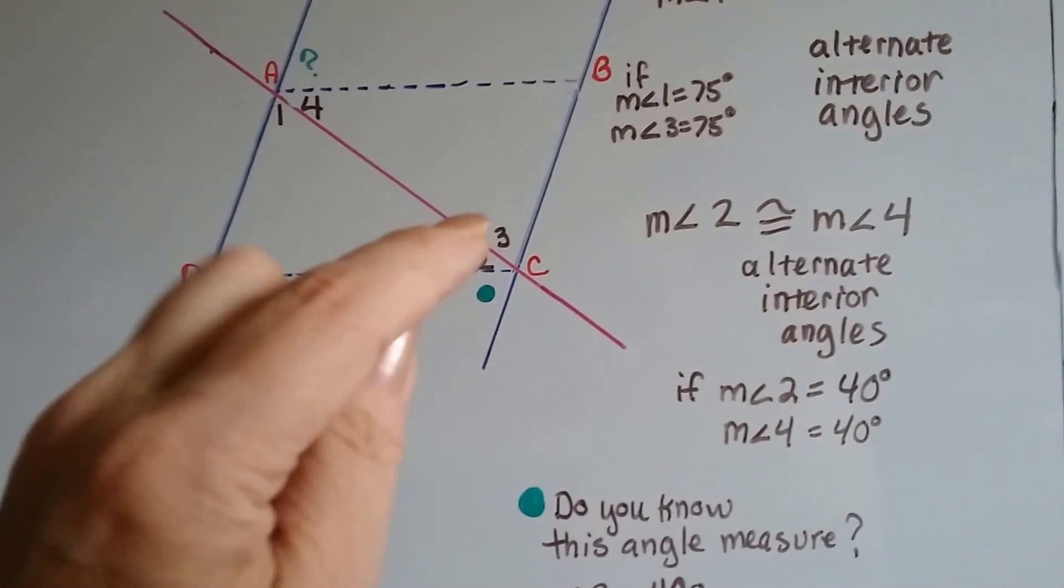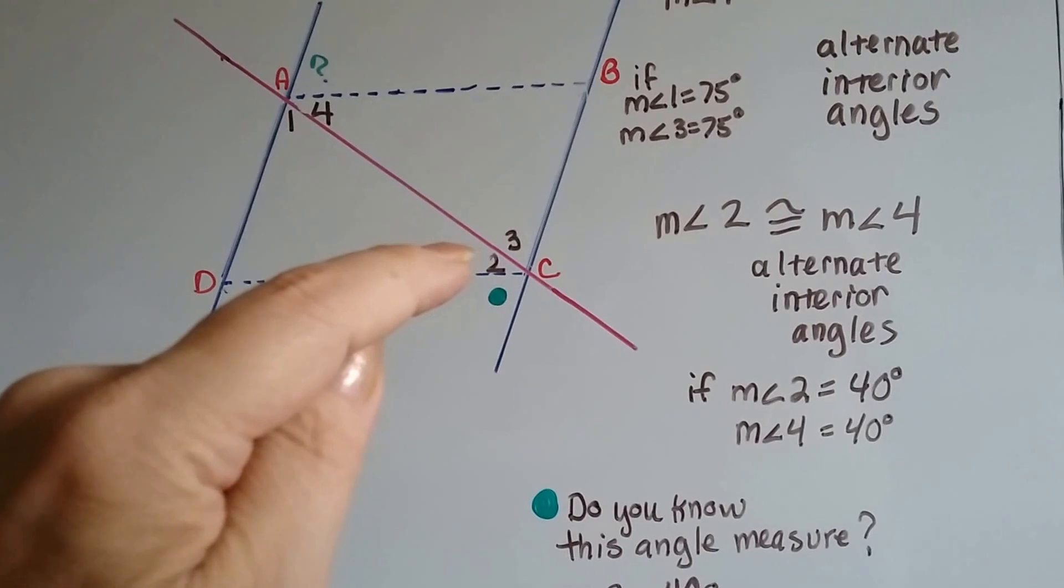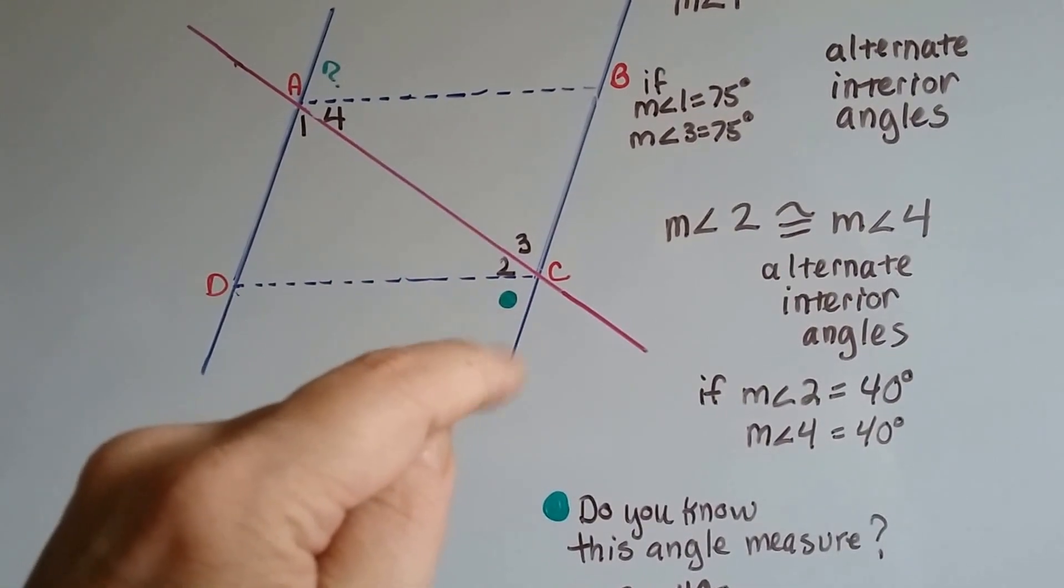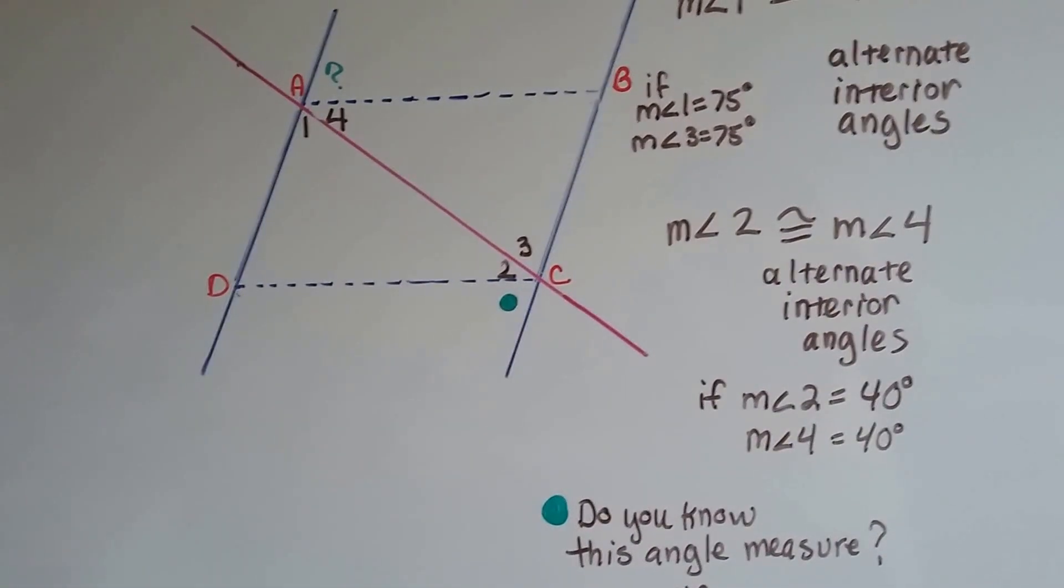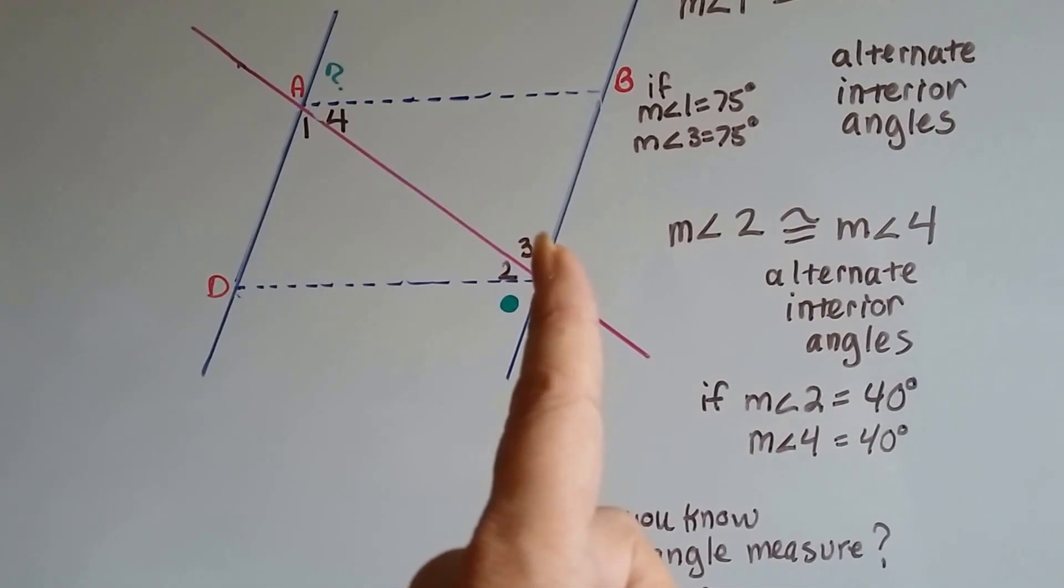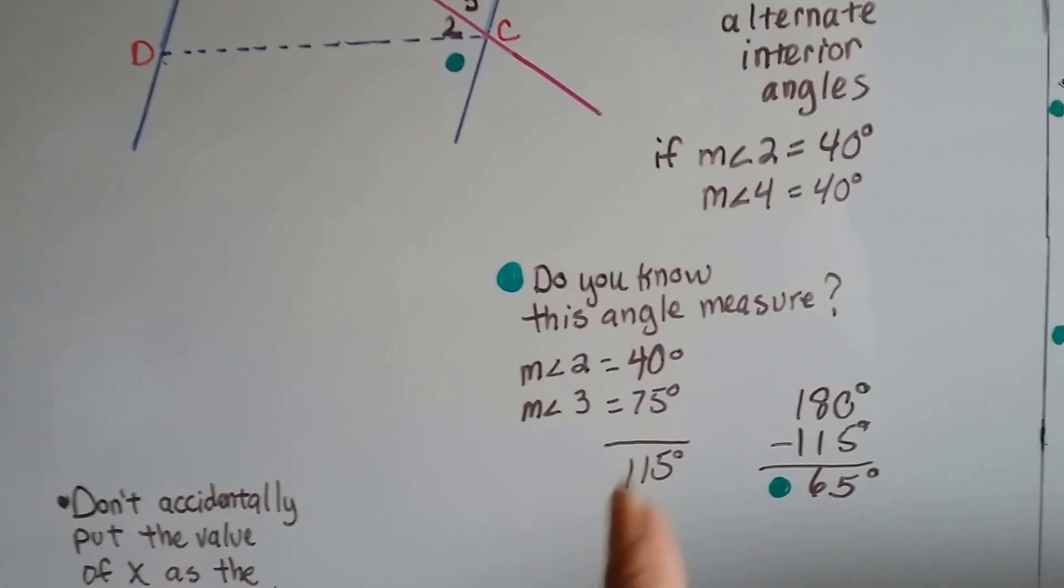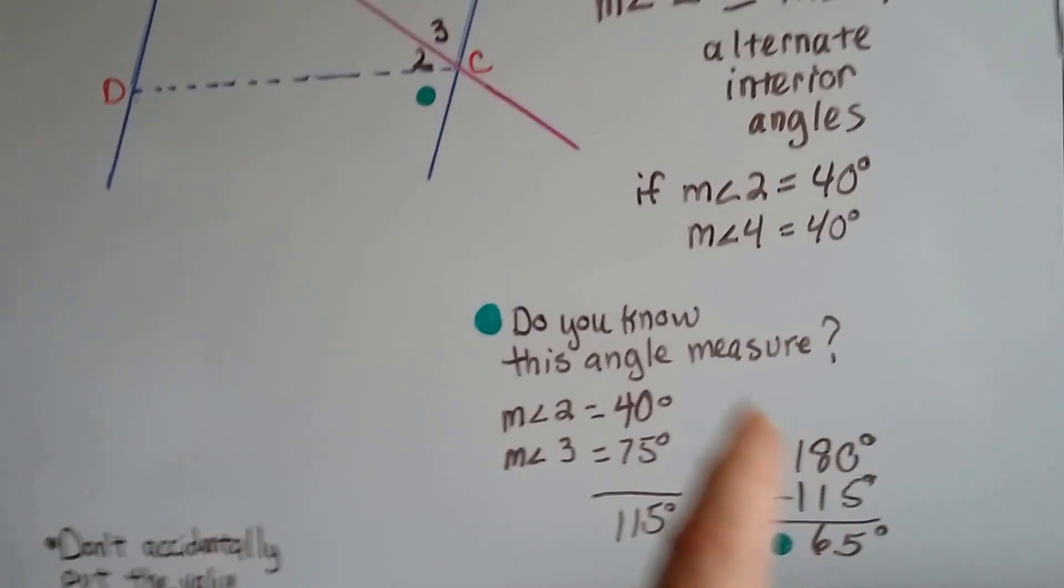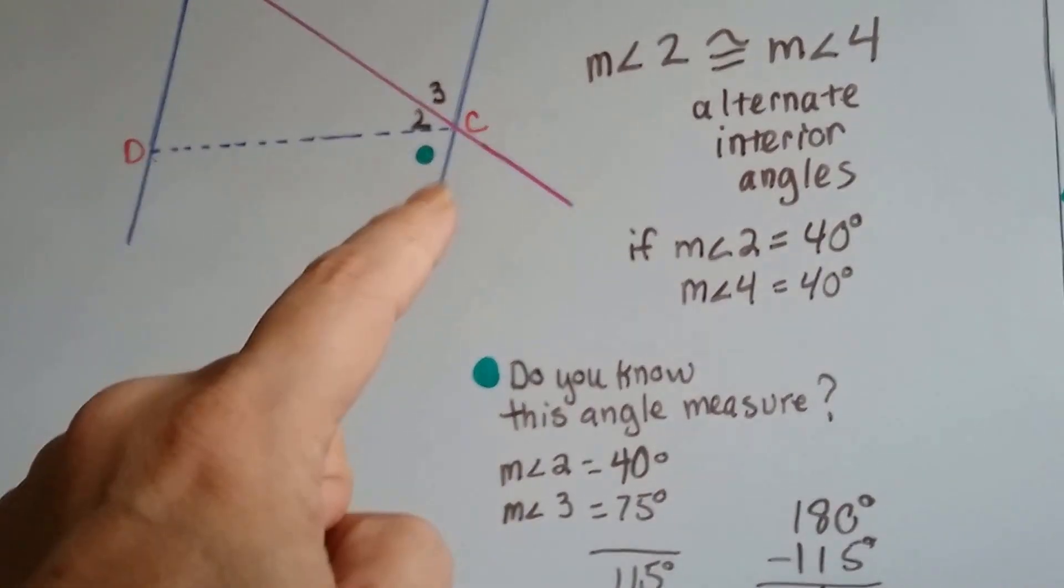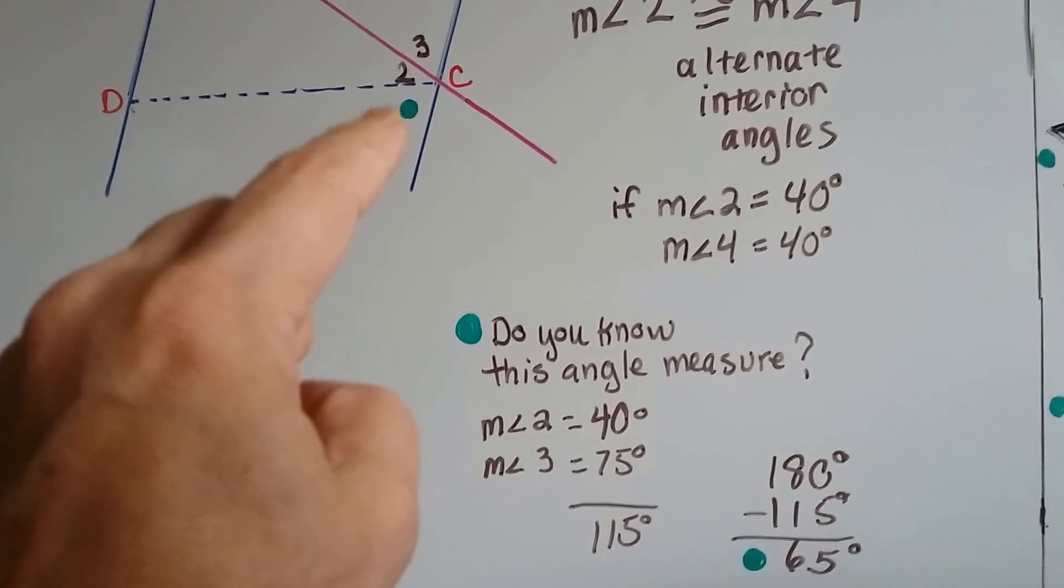So see this green dot here? If three is seventy-five degrees and two is forty degrees, how many degrees is this angle where the green dot is, between the dotted line and this line here? Can you figure it out? Well, that's a straight line, isn't it? So that's going to be 180 degrees. So if we add the measures for three, which is seventy-five, and two, which is forty, we're going to get 115 degrees. All we have to do is subtract from 180, which is this whole thing on the straight line, and we get sixty-five degrees, and that means the angle where that green dot is, is sixty-five degrees.